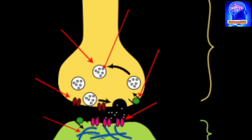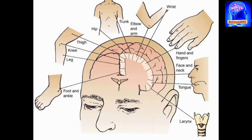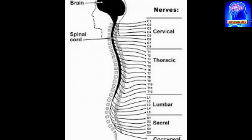The basic functions of the nervous system include controlling everything you do, like breathing, walking, thinking, and feelings. The system is made up of your brain, spinal cord, and all the nerves of your body. The brain is the control center.